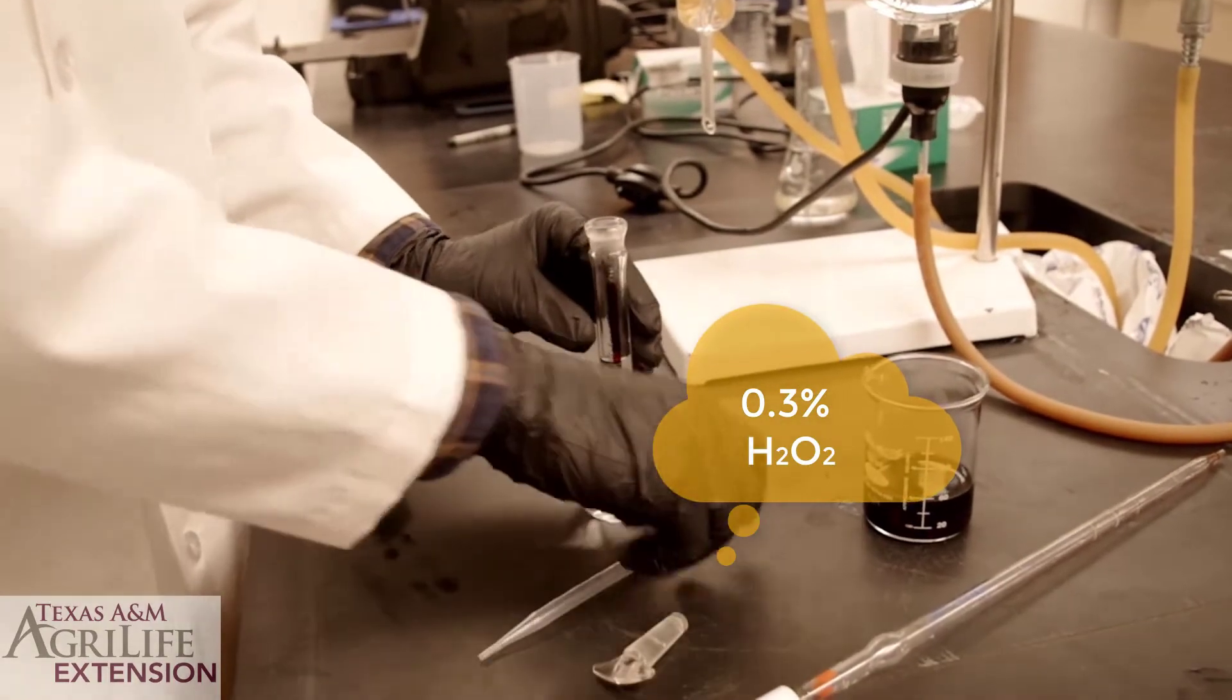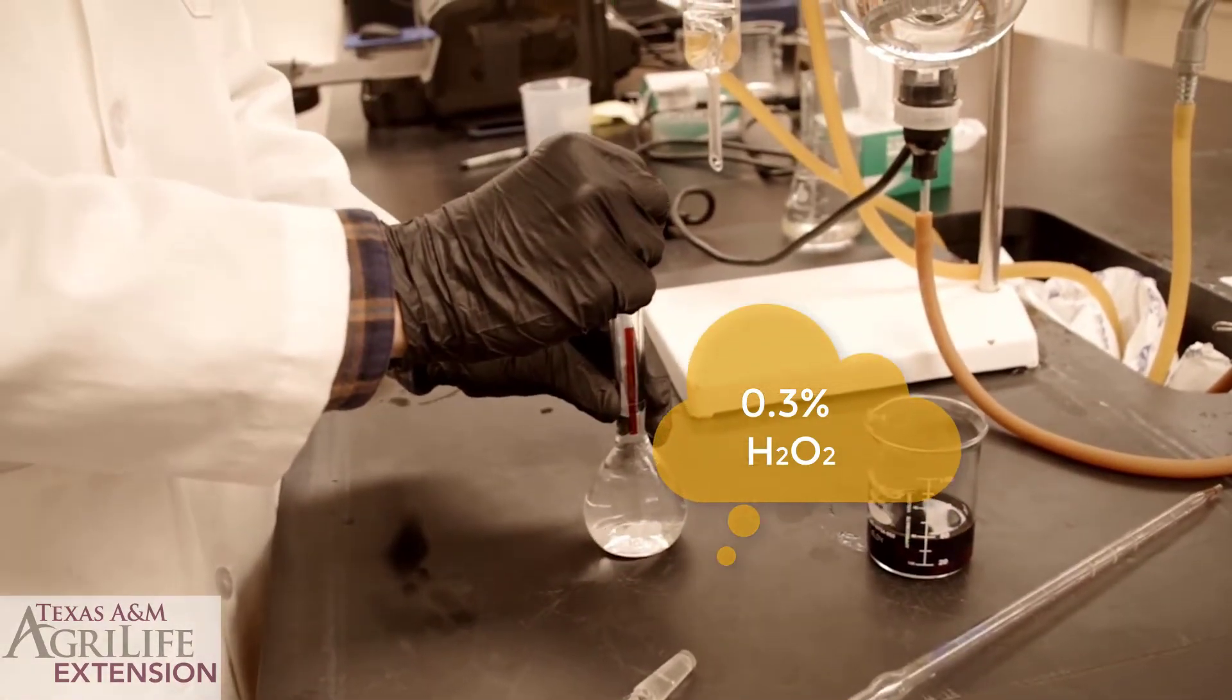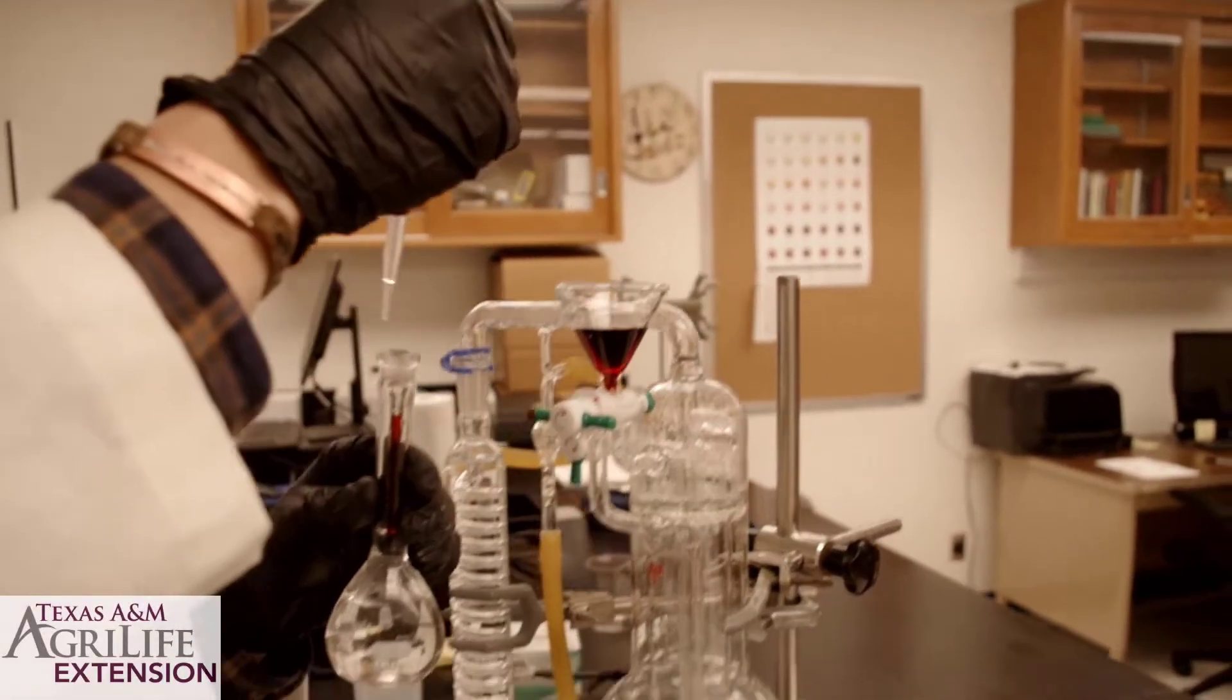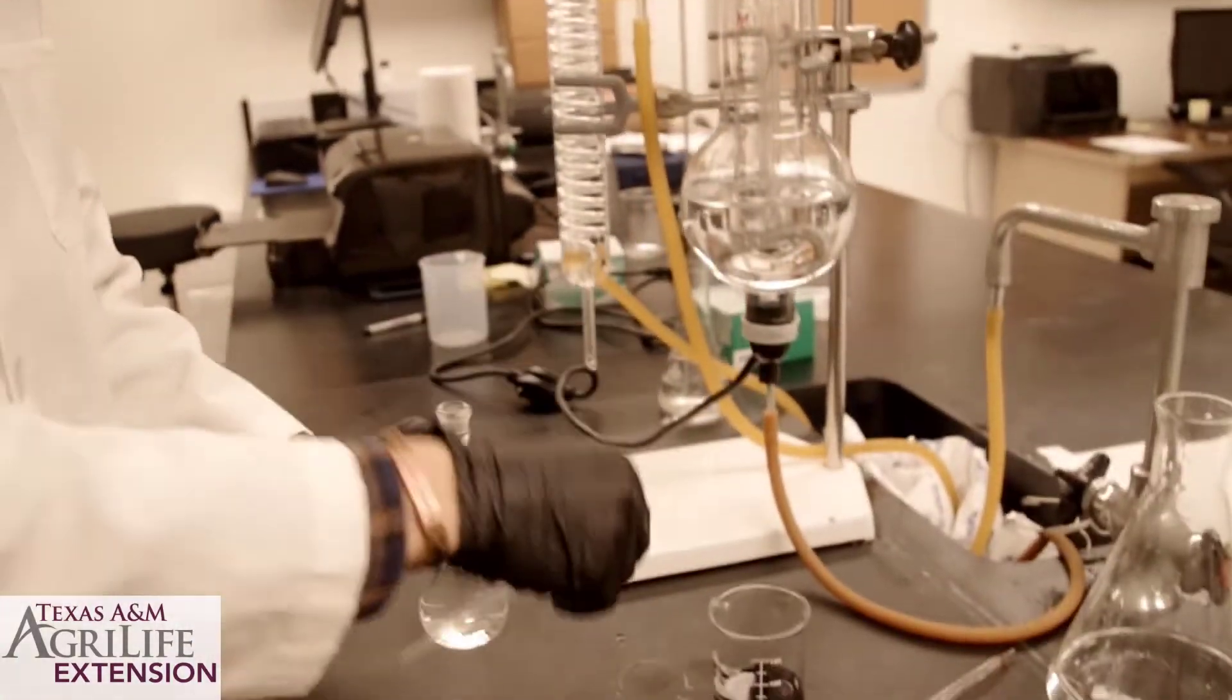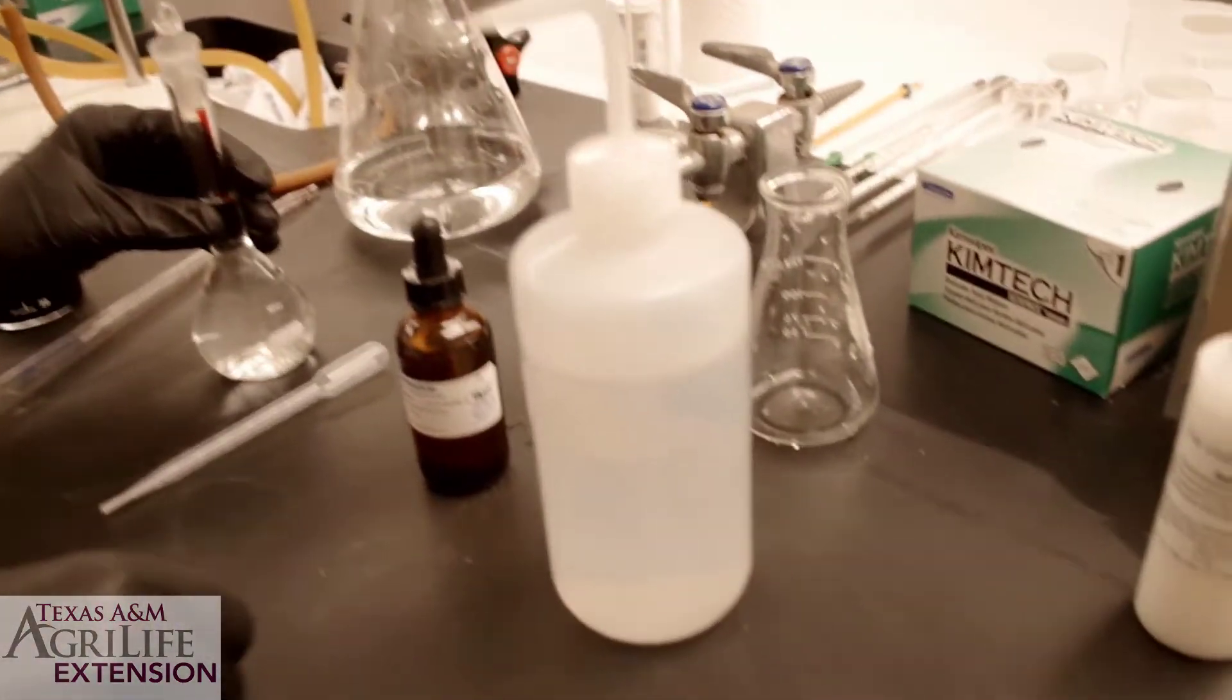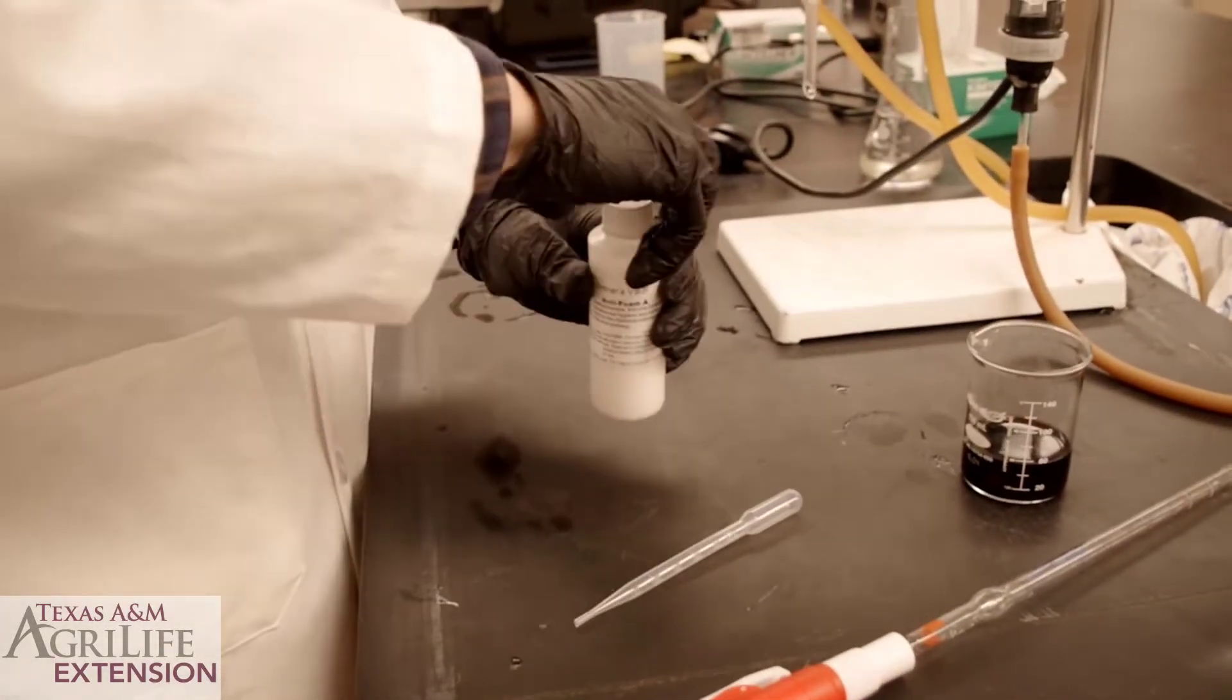Add 3 drops of 0.3% hydrogen peroxide and one drop of anti-foam to the funnel.